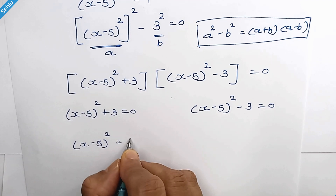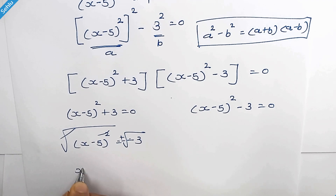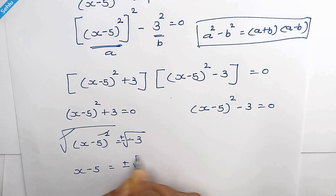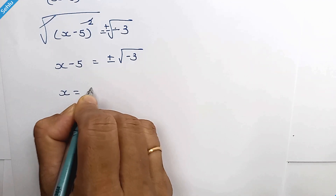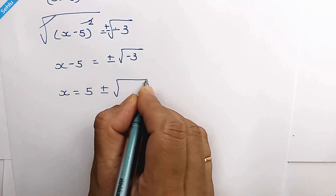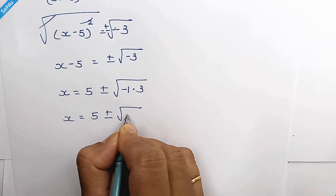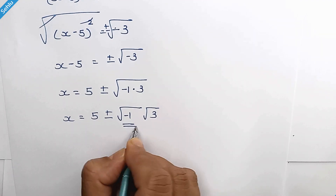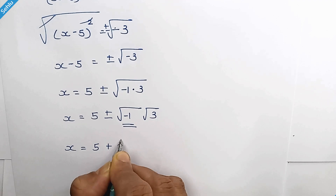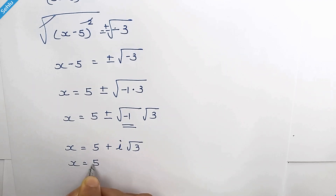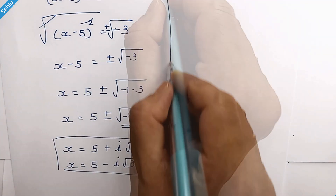For the first equation, move 3 to the right hand side, giving negative 3. Taking square root of both sides, square and square root cancel, so x minus 5 equals plus or minus square root of negative 3. Since negative 3 is negative 1 times 3, and square root of negative 1 is iota, we get x equals 5 plus iota root 3 and x equals 5 minus iota root 3. These two are complex roots.